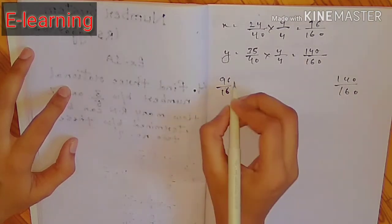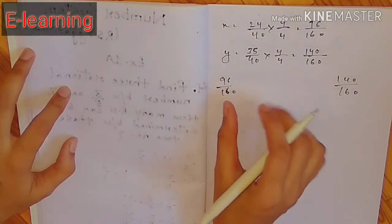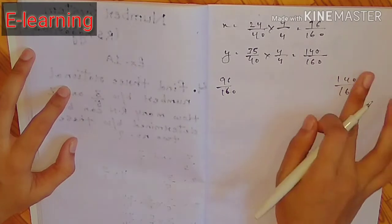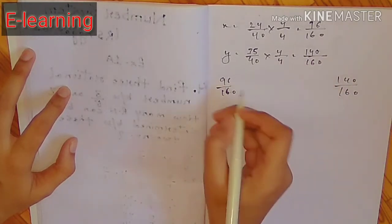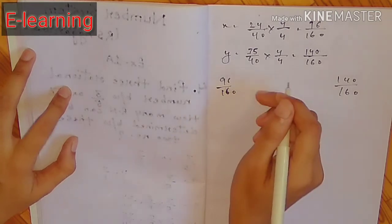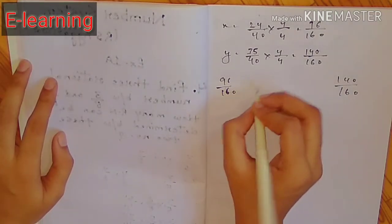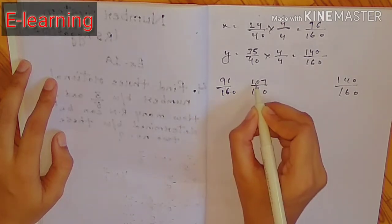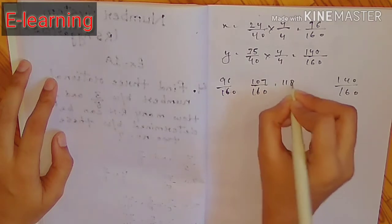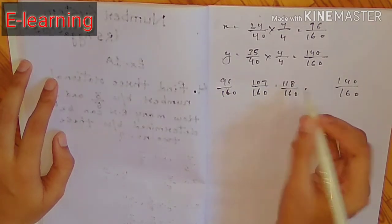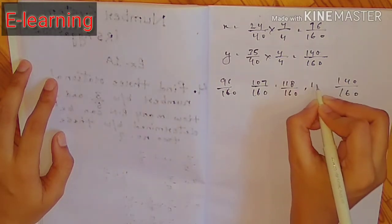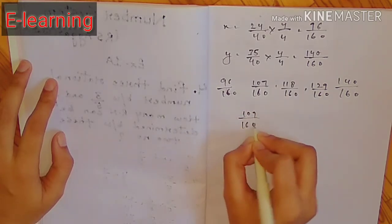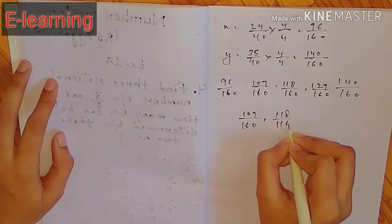3 equal numbers put करेंगे। 96 में 11 add करेंगे — आप कोई भी number add कर सकते हैं: 10, 12 — ऐसा add करेंगे जो 140 से कम आए। 96+11 = 107/160, 107+11 = 118/160, 118+11 = 129/160।